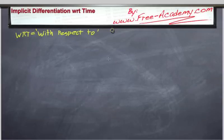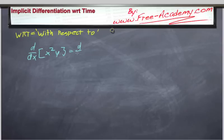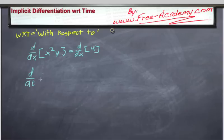In this lecture, presented by www.free-academy.com, we're going to introduce implicit differentiation with respect to time. In the previous lectures, we had been finding the derivatives with respect to x of something along the lines of x squared times y equals a constant. So our equation was 4 equals x squared times y, and this is the equation for the derivative using implicit differentiation. Now, we're going to be doing the exact same thing, but we're going to find the derivatives with respect to time.